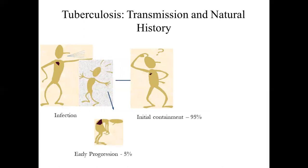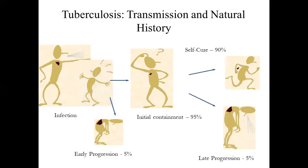Moving on to the natural history of tuberculosis: if the patient gets the bacilli and is not treated, in 95% of cases there is initial containment of the disease and only in 5% of cases is there early progression — that is, the patient will have primary tuberculosis. Of the 95% with initial containment, 90% of those cases self-cure, and only 5% develop secondary progression.